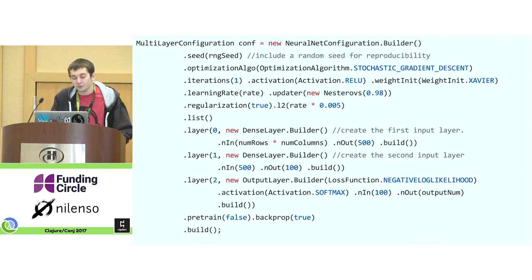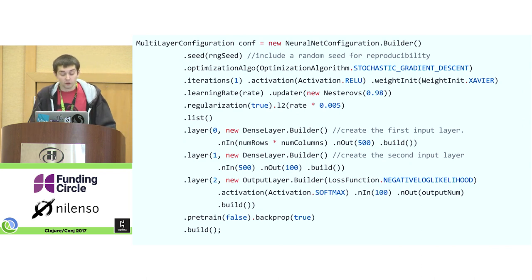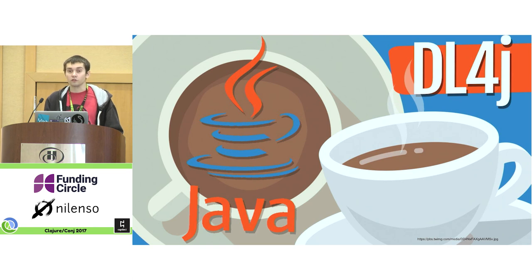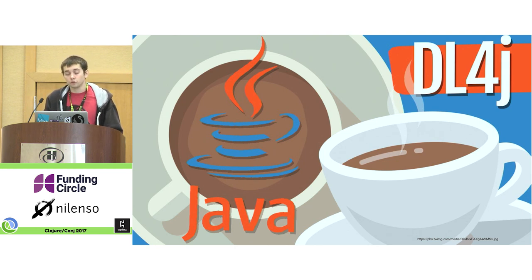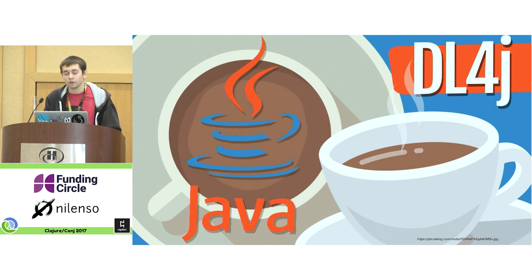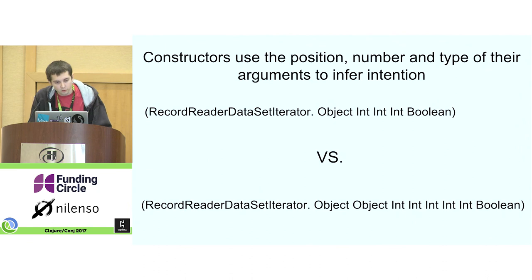Before diving into the Java builder pattern, let's talk about constructors. They're part of Java and to use a library like DL4J we have to work with them. Java interop is never really fun, and I'd recommend going with a library like Cortex if it solves your problem. But if you need recurrent neural networks or LSTMs, that's when I would reach into the Java ecosystem and find yourself in DL4J interop land.